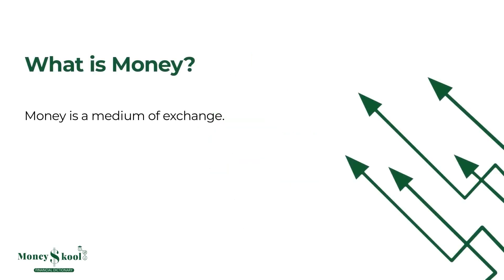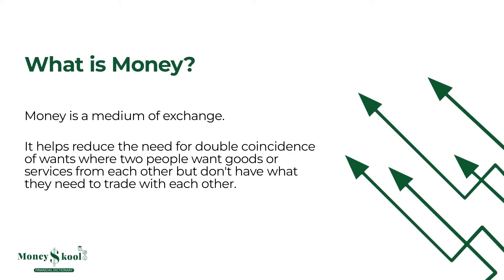Money is a medium of exchange. It helps reduce the need for double coincidence of wants, where two people want goods or services from each other but don't have what they need to trade with each other.